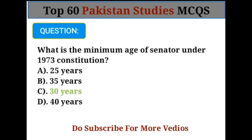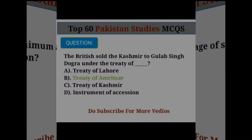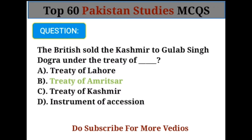What is the minimum age of a senator under the 1973 Constitution? Option C: 30 years. The British sold Kashmir to Gulab Singh Dogra under the Treaty of Amritsar.